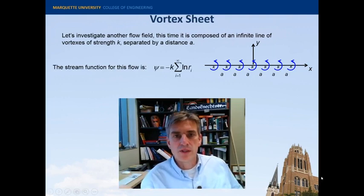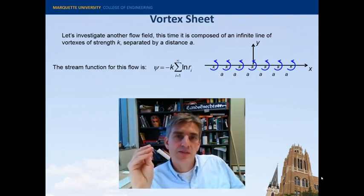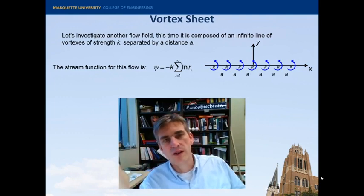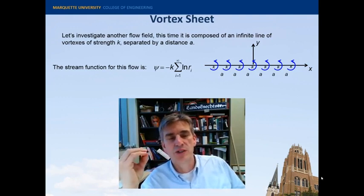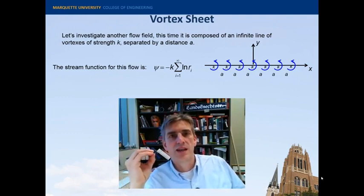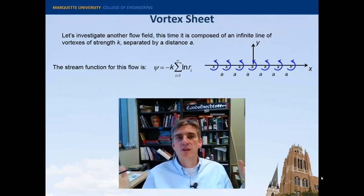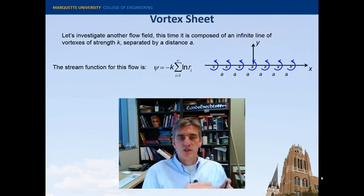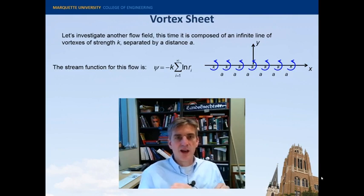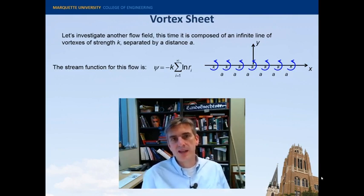So an individual vortex, the strength of an individual vortex is k times natural log of r, the radial location of that vortex. And so to have an infinite sheet of them means you're just going to sum this over r, which is each location of the vortex, the origin of the vortex. And they all have the same amplitude k, and that amplitude k is constant.